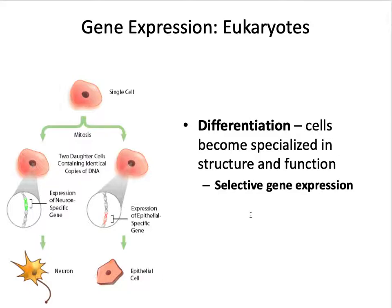Selective gene expression explains how a liver cell becomes a liver cell or how a muscle cell becomes a muscle cell. For instance, on your skin you wouldn't want retinal cells to develop — you wouldn't want cells to differentiate into eye cells on your skin.